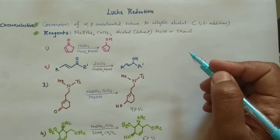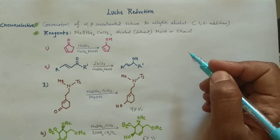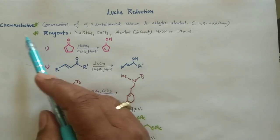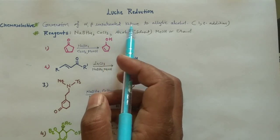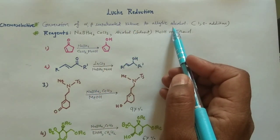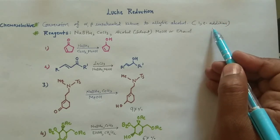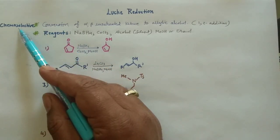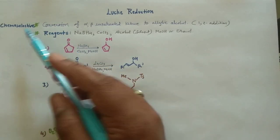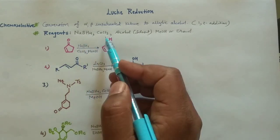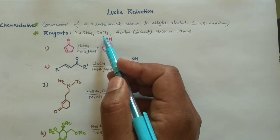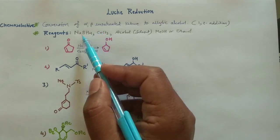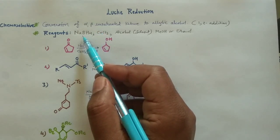It is very important to understand how the mechanism goes for this reaction and how we can decide the product. The most general use of Luche reduction is the chemoselective conversion of alpha-beta unsaturated ketone to the allylic alcohol, and this would form according to the 1,2 addition. I am calling it chemoselective because sodium borohydride in the presence of lanthanides — especially lanthanide chlorides, and more generally cerium chloride — increases the chemoselectivity of sodium borohydride manifold.